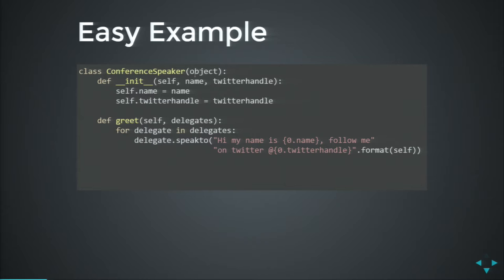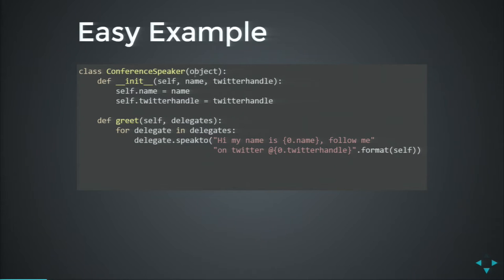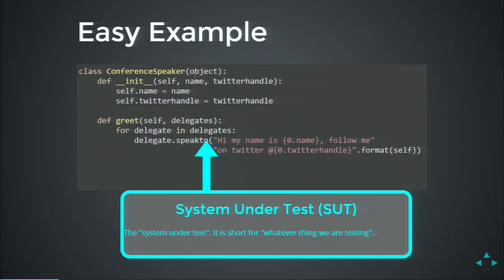The talk will be very example-driven. I was trying to find some common ground, and after we've all been locked in this conference venue for five days together, the one thing we have in common is a deep expertise in coding conferences. So all my examples are based on a mythical system that models coding conferences. Here's the first example: a conference speaker class that comes out, welcomes the audience, and introduces their Twitter handle. And with this, we get our first definition — system under test — which means exactly what you think: it is the code that we're testing.